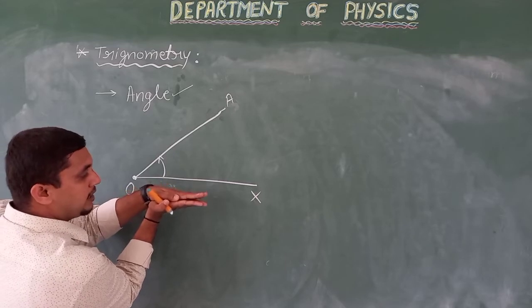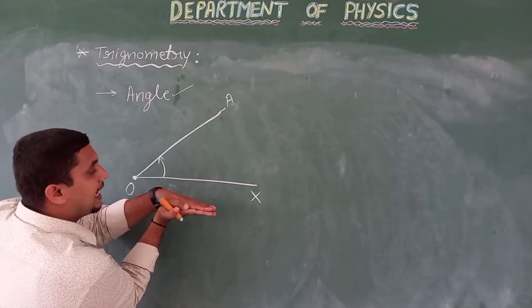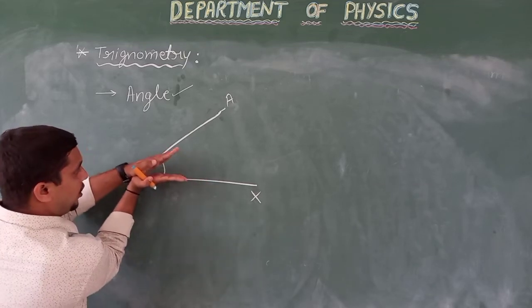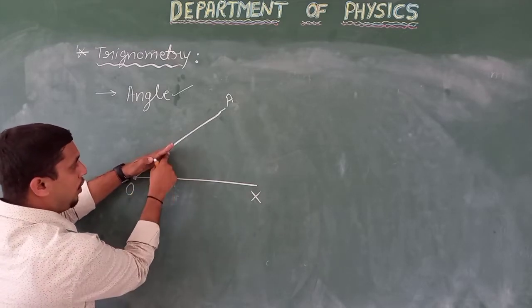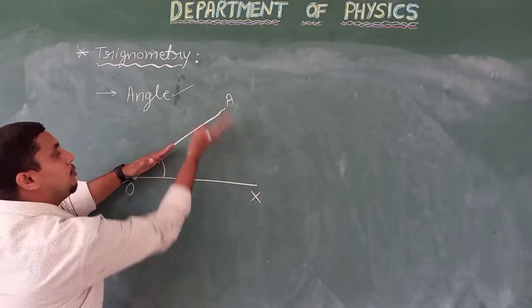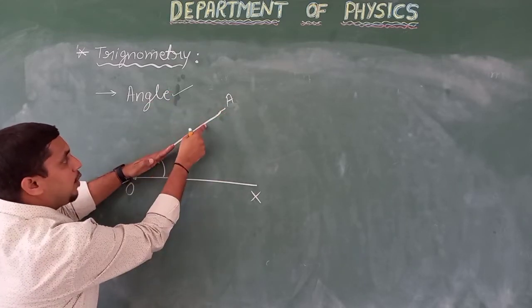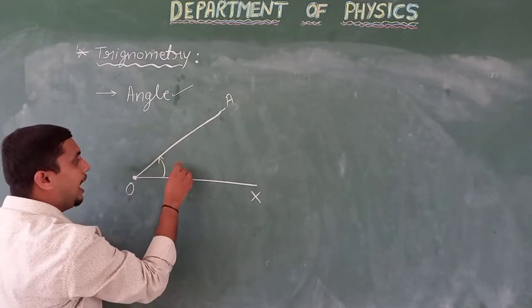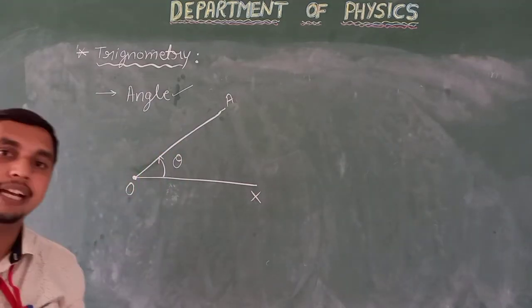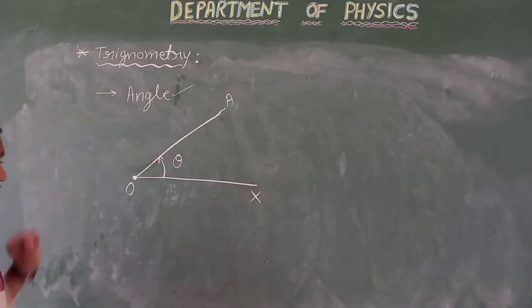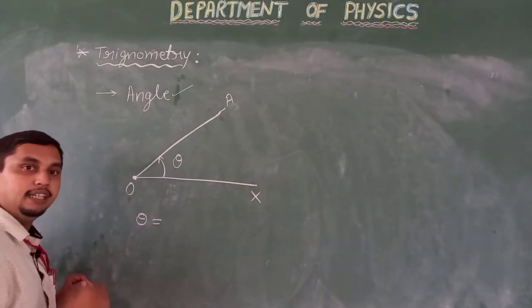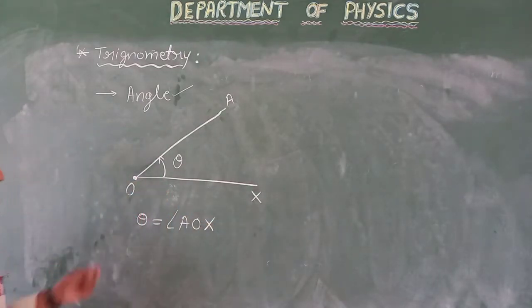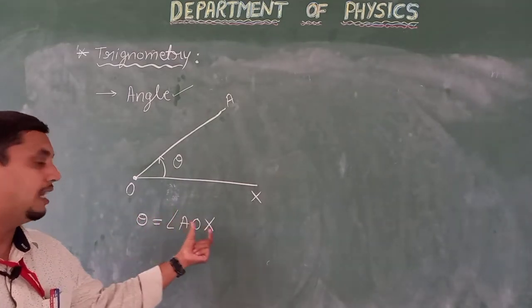Now I am revolving this line OA in an anti-clockwise direction. The amount by which the revolving line OA revolves in the anti-clockwise direction — from its initial position to the final position — is taken as the angle, represented by theta. So here, theta is the angle AOX.